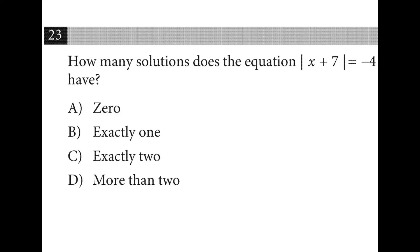The definition of absolute value is distance from 0, which will never be negative. So this one has 0 solutions because negative 4 is on the right side of the equation.